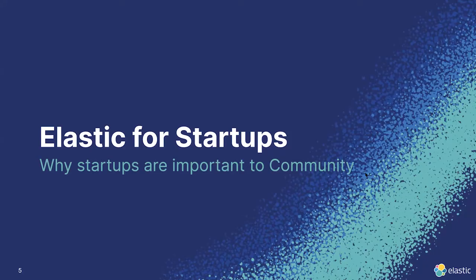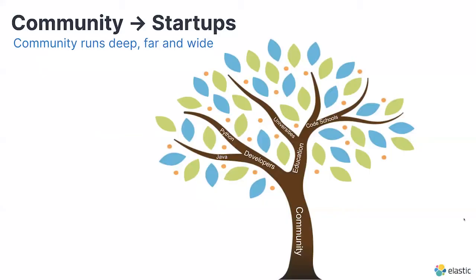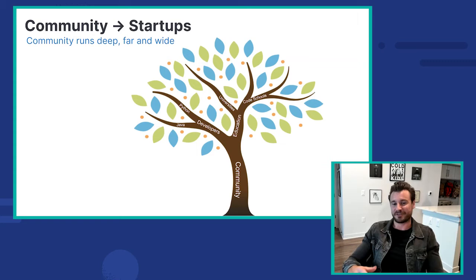Everything we're building for the startup ecosystem was born out of the groundwork laid by the community team here at Elastic. Our community runs deep and has been a foundational piece of who we are as a company. Using the analogy of a tree, the base is that foundation of community. The first branch was our efforts supporting developer communities. Then we grew a new branch into the education sector, working with higher education institutions to provide resources to students. We've also grown a third branch for security, actively serving those communities.